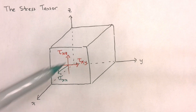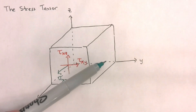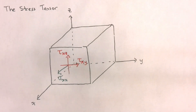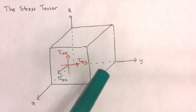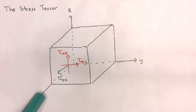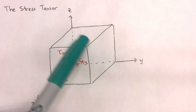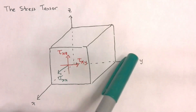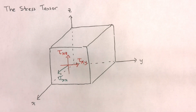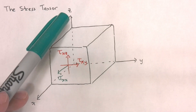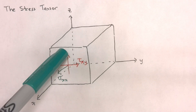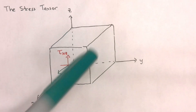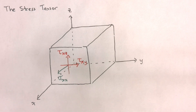We can repeat this analysis for the y-face and for the z-face. In the case of the y-face, we will have a shear stress acting in the x-direction, a shear stress acting in the y-direction, and a normal component acting along the y-direction. In the case of the z-face, we will have a shear stress acting in the x-direction, a shear stress acting in the y-direction, and a normal component acting in the z-direction.